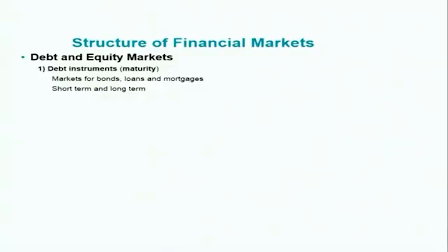Let us begin with the structure of financial markets. Overall, the financial markets can be categorized into two markets: one is called the debt market and the other one is equity markets. In the case of the debt market, it is mainly for the markets for bonds, loans and mortgages, and there can be different types of debt instruments — short term and long term.